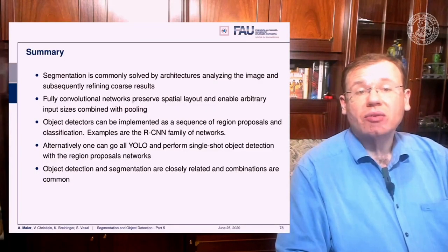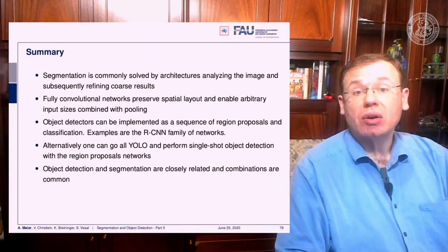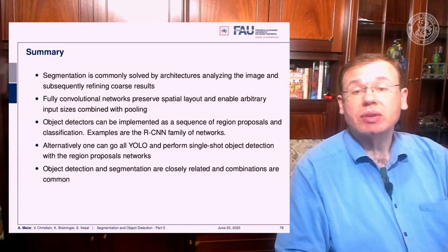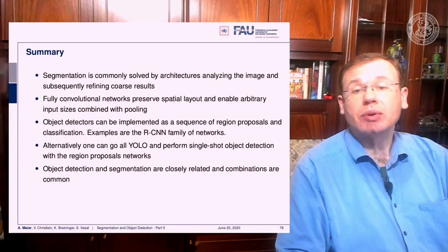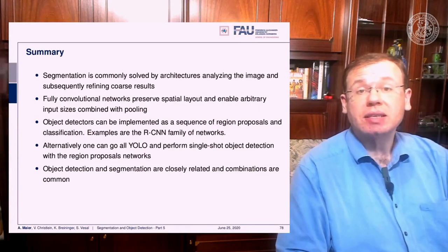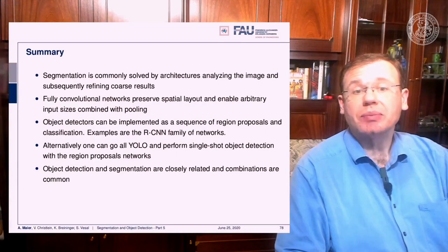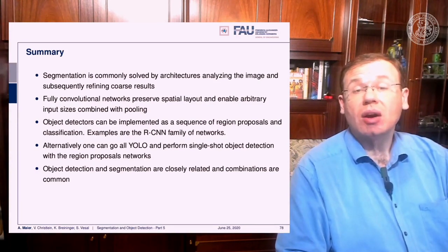Let's summarize what we've seen so far. Segmentation is commonly solved by architectures that analyze the image and subsequently refine coarse results. Fully convolutional networks preserve the spatial layout and enable arbitrary input sizes with pooling. We can use object detectors implemented as a sequence of region proposals and classification, leading to the family of RCNN-type networks. Alternatively, you can use single-shot detectors — we looked at YOLO, a very common and fast technique, YOLO 9000, and RetinaNet for scale-dependent detection across many scales, such as in histological slice processing. Object detection and segmentation are closely related, and combinations are common, as seen here for instance segmentation.